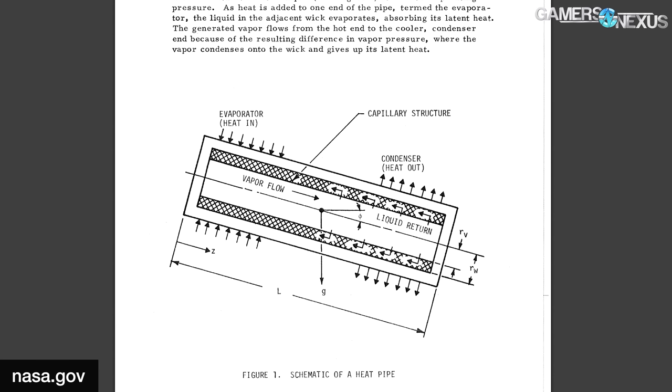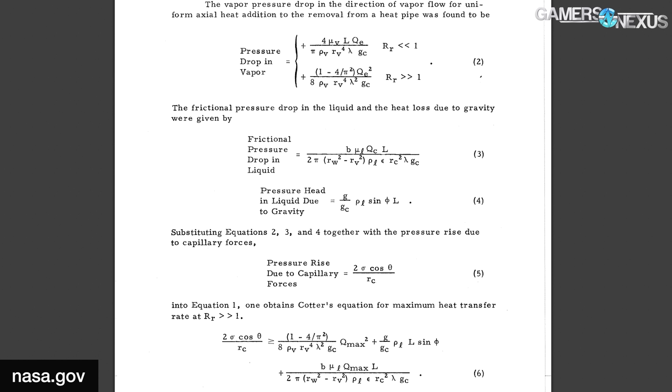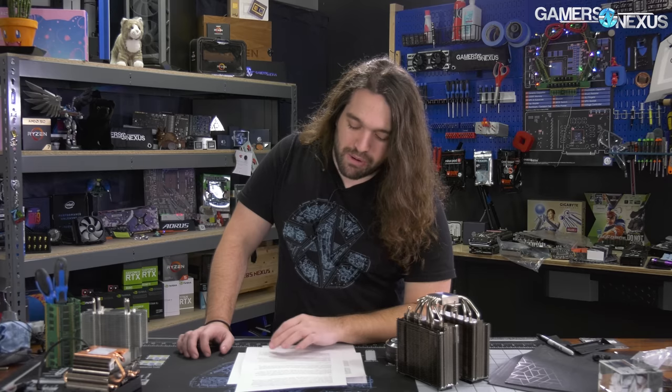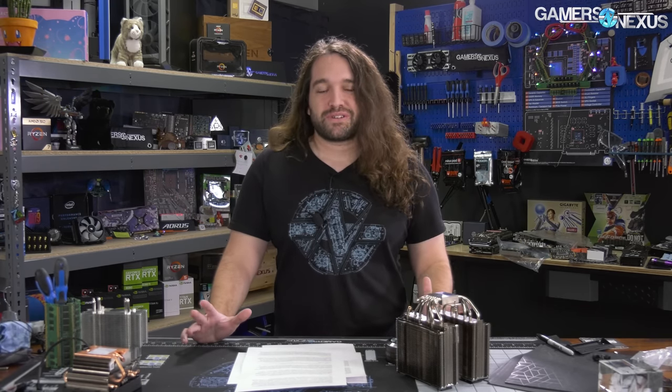We don't quite have the budget to go to space, although maybe if Patreon gets big enough we could do that. Instead, we'll test how gravity affects coolers in standard computer use cases in a real-world scenario on Earth. That involves testing in a flat bench horizontally, a vertical orientation like a standard standing PC, and then upside down.